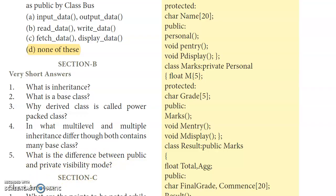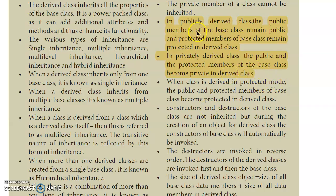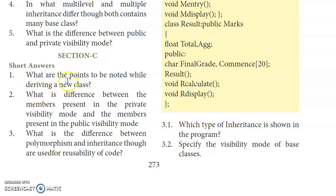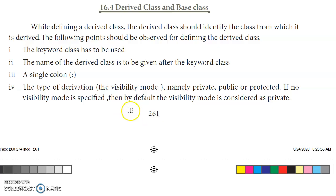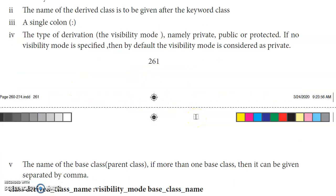Fifth question: What is the difference between public and private visibility mode? When deriving a class, we use the class keyword, the class name, a single colon, the visibility mode, and the base class name. If there is more than one base class, they are separated by commas, following the inheritance rules.